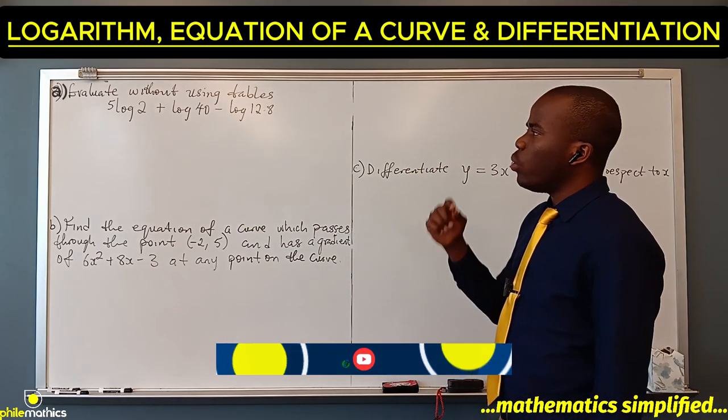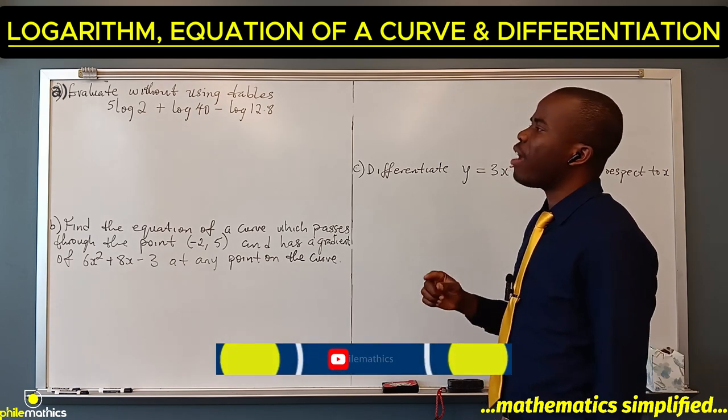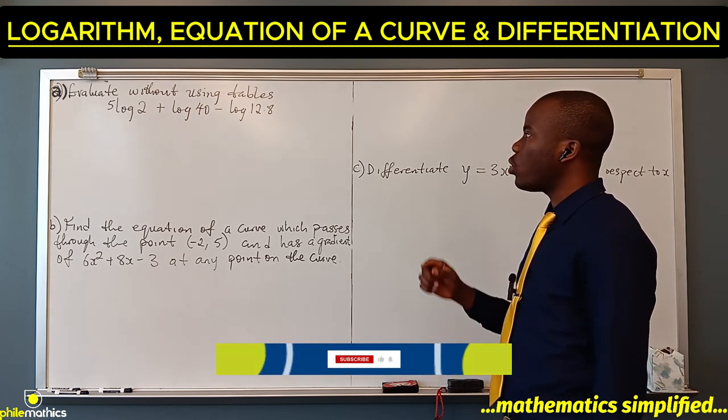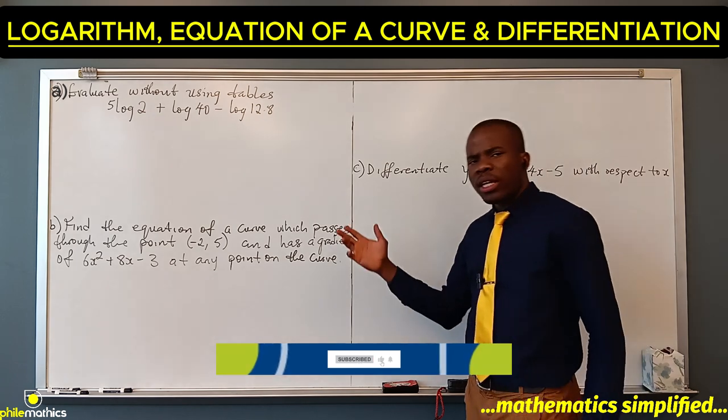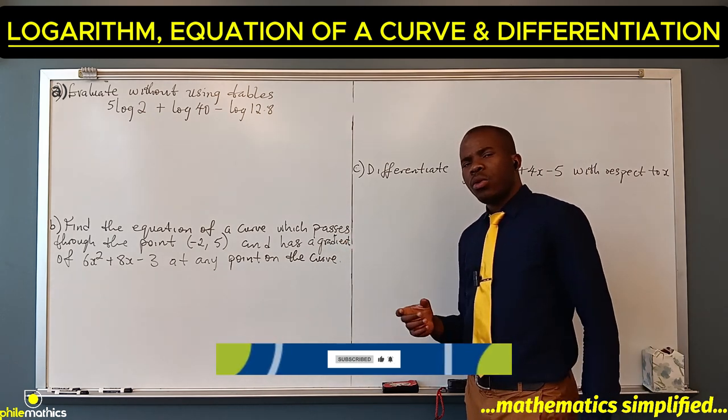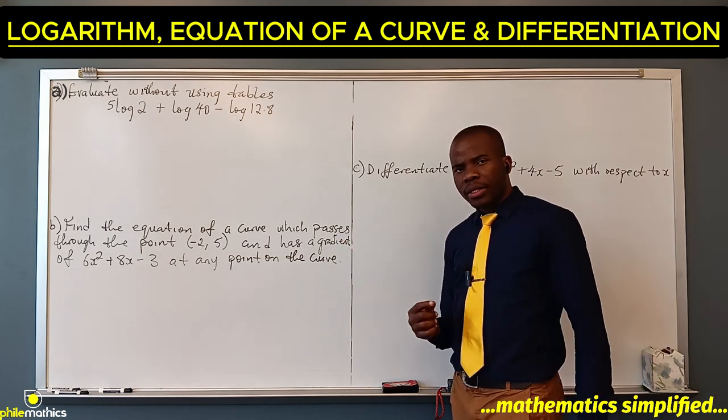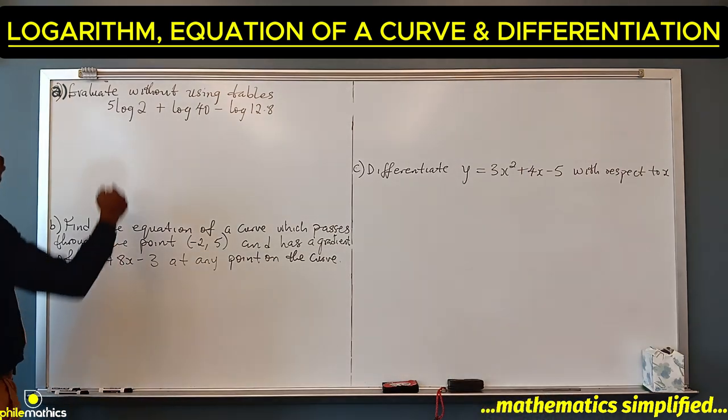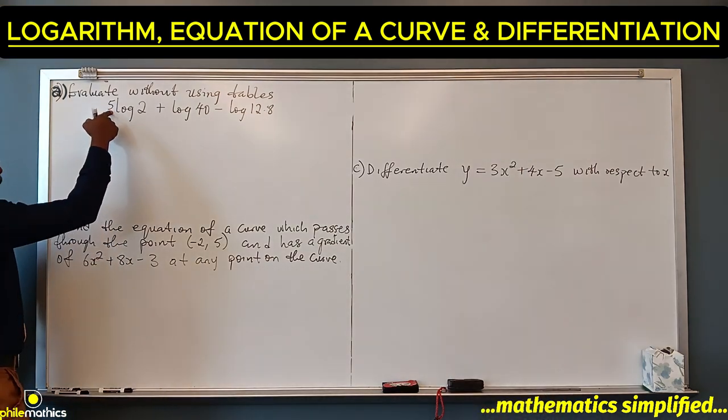Evaluate without using tables: 5 log 2 plus log 40 minus log 12.8. When you are given logarithms like this without a specified base, the base is assumed to be base 10.